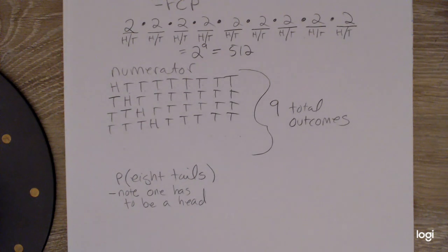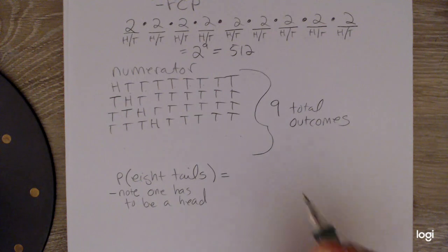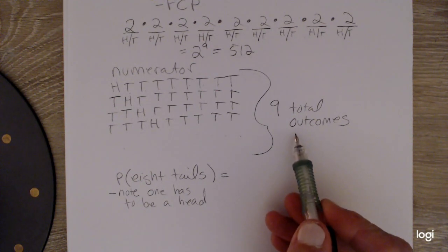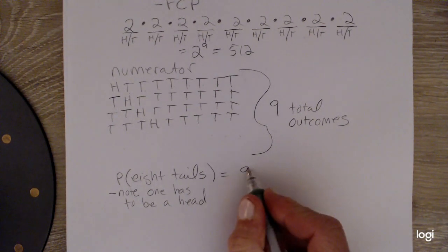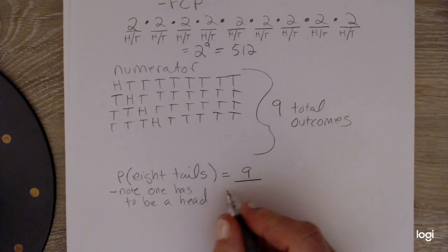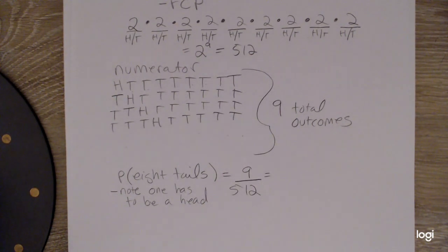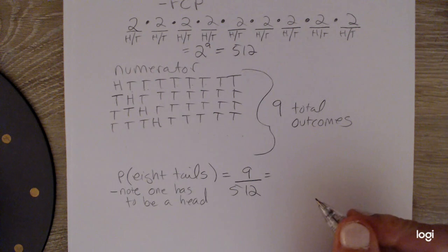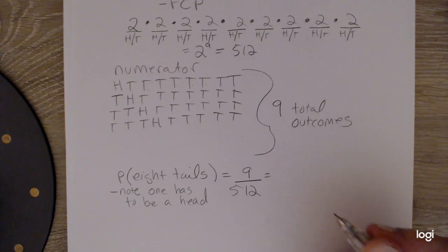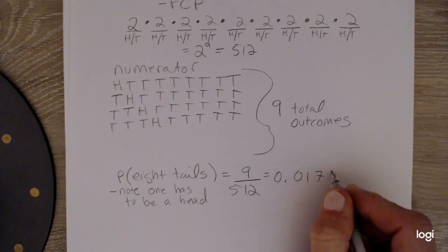So putting it all together, the probability we get eight tails is going to be how many ways we can get exactly eight tails. And that's going to be nine out of how many outcomes are in our sample space, and that's 512. So as a decimal rounded out to four decimal places, I get 0.0176.